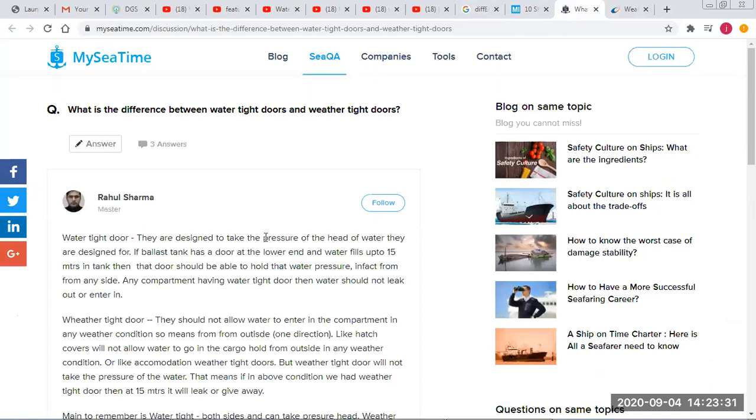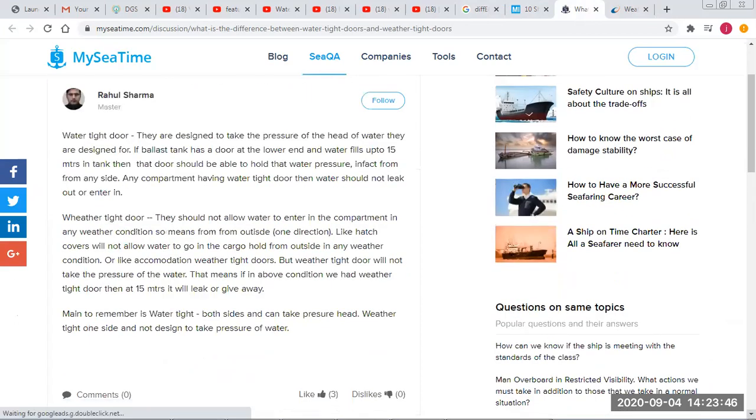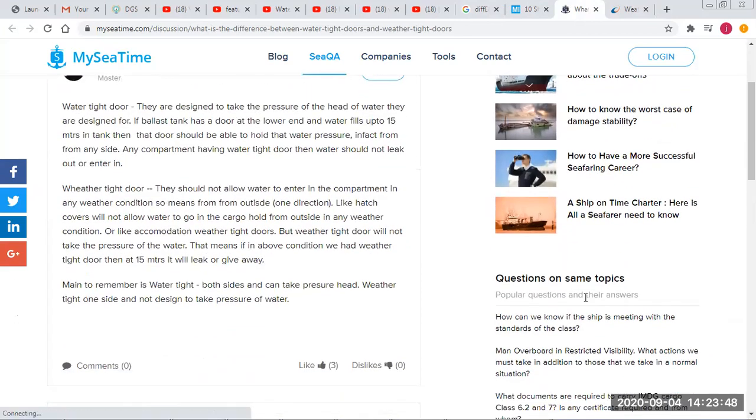Water tight openings are pressure tested for a head of up to 15 meters, which can withstand from both sides outside and inside. Weather tight is only for allowing water, and there is no height of water because it cannot withstand the pressure. That is the main difference.